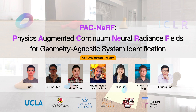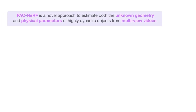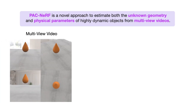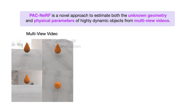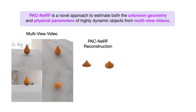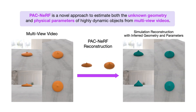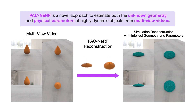Is it possible to create digital twins from videos without geometry priors? PAC-NERV is a novel approach to answer this question, which can estimate both the unknown geometry and physical parameters of highly dynamic objects from multi-view videos.